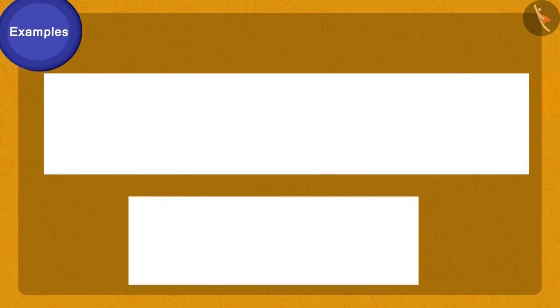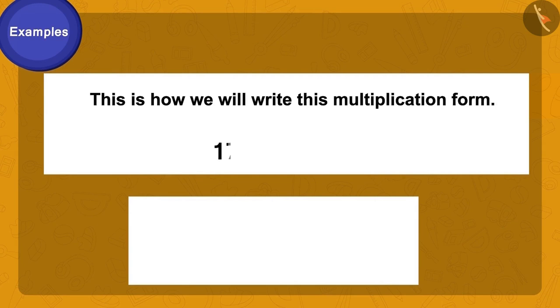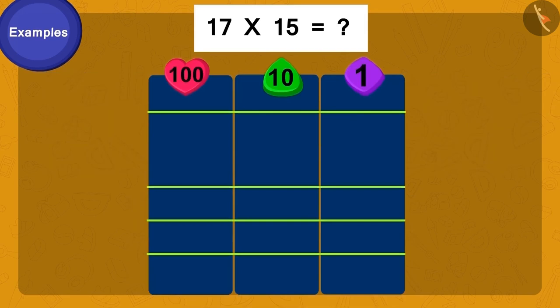Come children, let us help Bablu and Raju once again. This time, let's learn to perform this multiplication using a different process. First, we will write multiplication this way. Now, we will multiply five of fifteen by seven of seventeen.